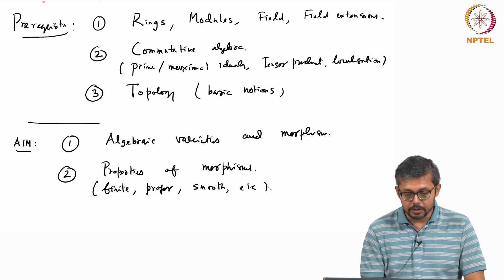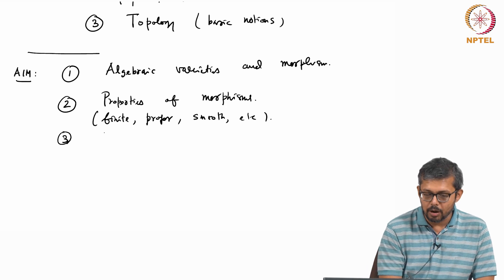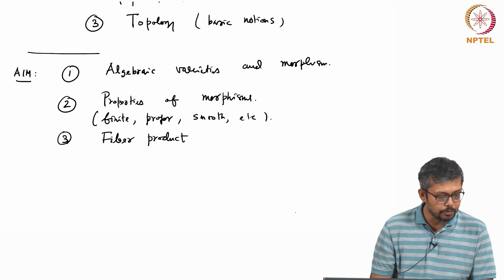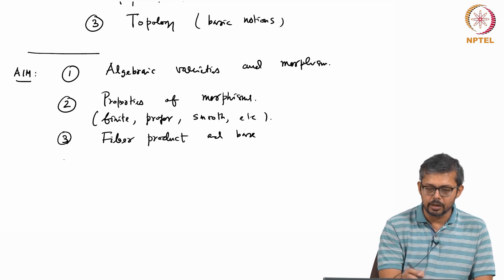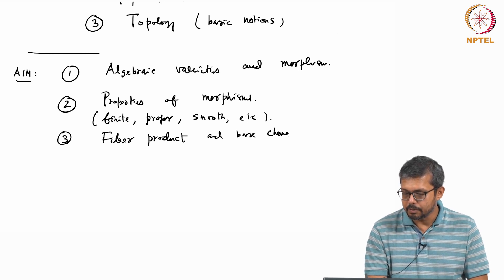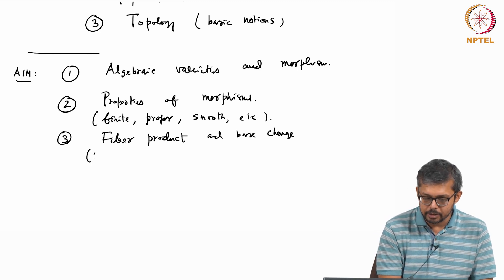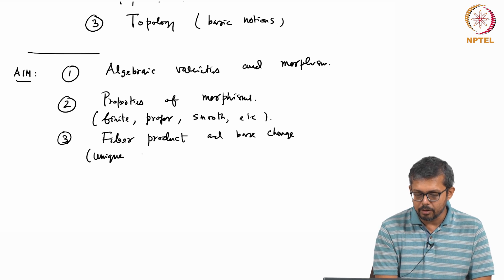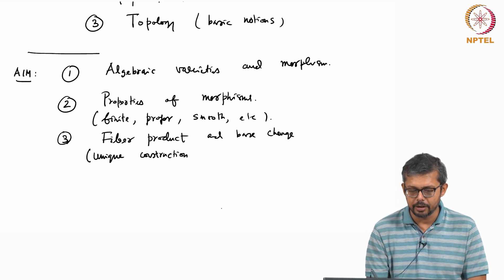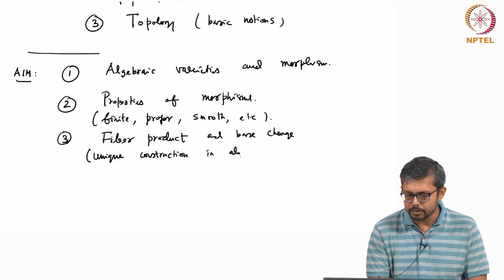And then third topic we will cover is fiber product - fiber products and base change. Maybe I will do three first and then come to two because when you study morphism you need this construction fiber product and base change. Maybe this topic will come before. This is important - this is a very unique construction in algebraic geometry which actually helps you to study morphisms of algebraic varieties. This is not a unique construction in algebraic geometry - this is something special.